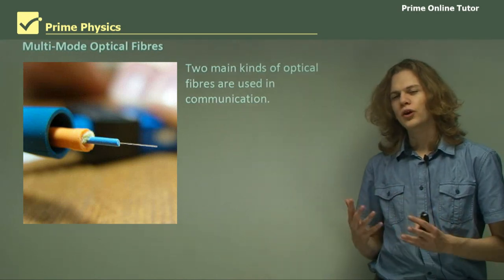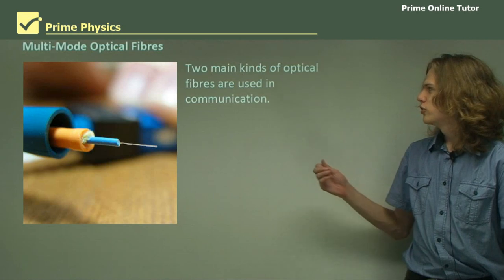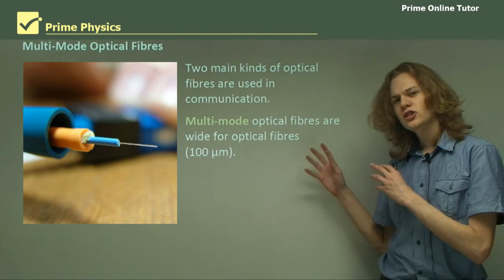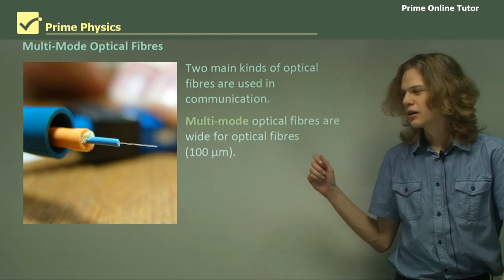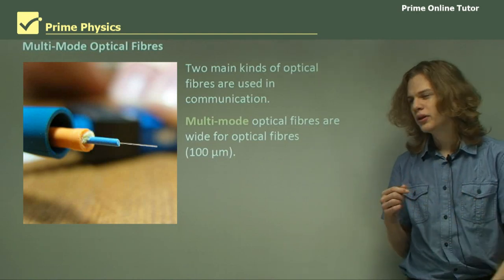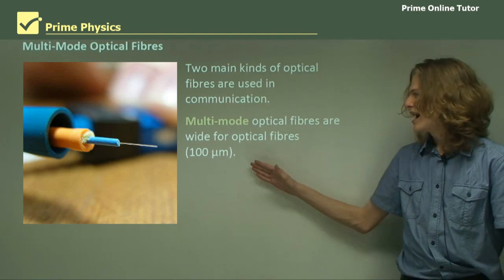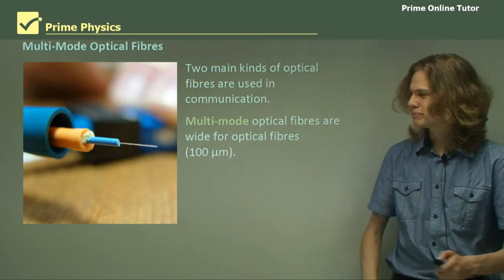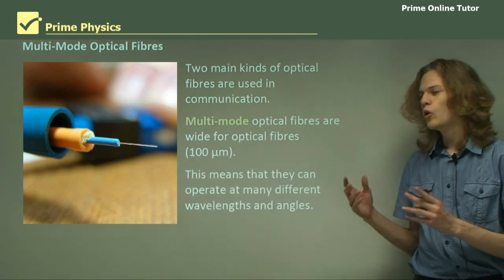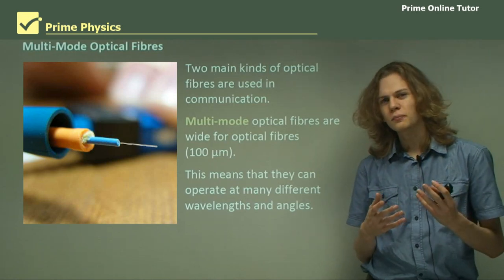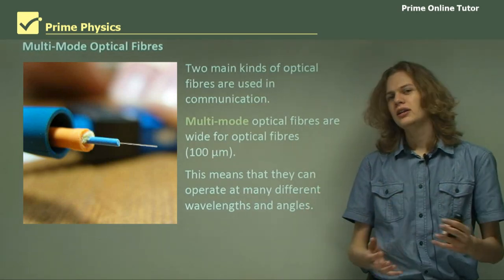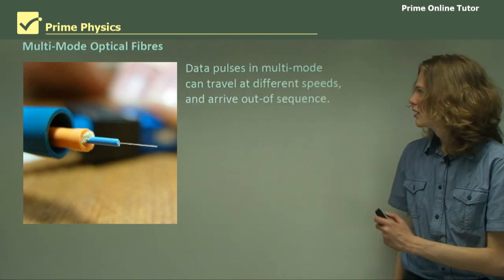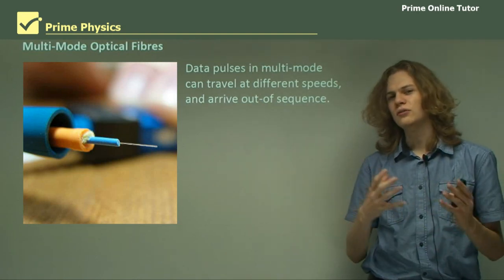Now we have two different sorts of optical fibers. One sort is called the multi-mode optical fiber. These tend to be quite wide for optic fibers — relatively wide at one-tenth of a millimeter, though we're still talking very small scales. And what this means is that they can operate at a number of different wavelengths and angles — that is, the light can propagate through them in different modes, hence multi-mode. So data pulses in multi-mode can, in fact, travel at different speeds.